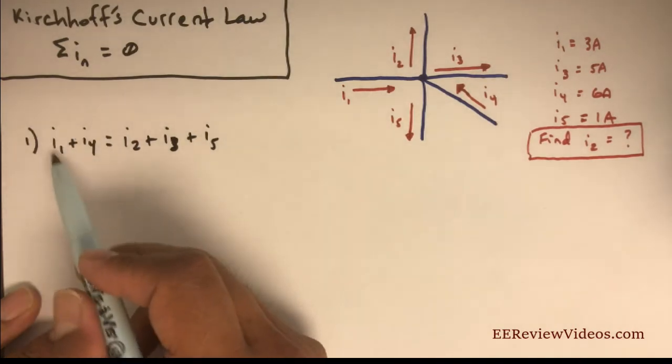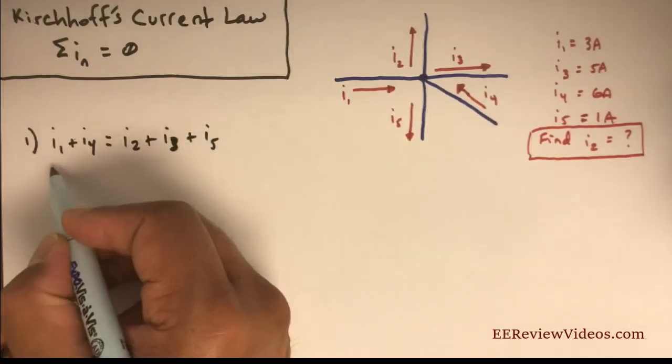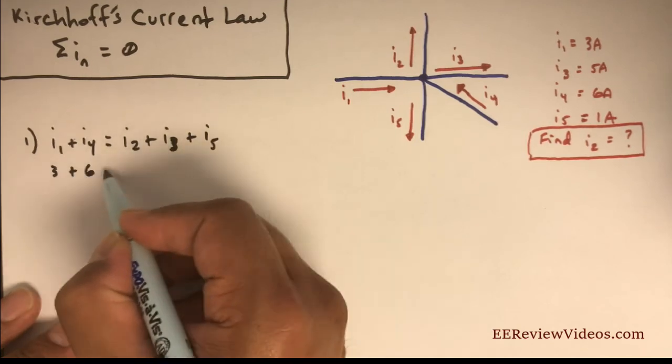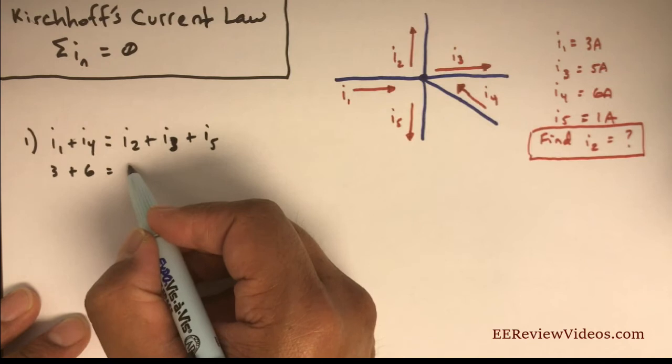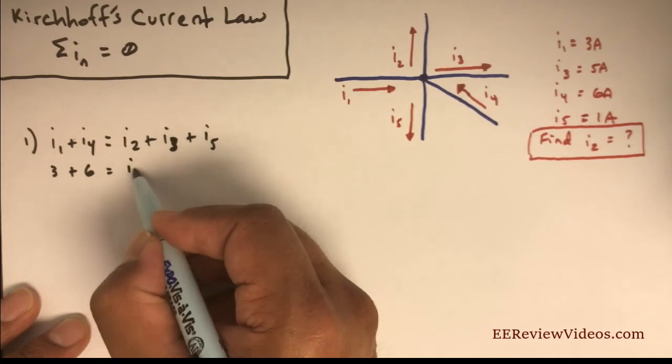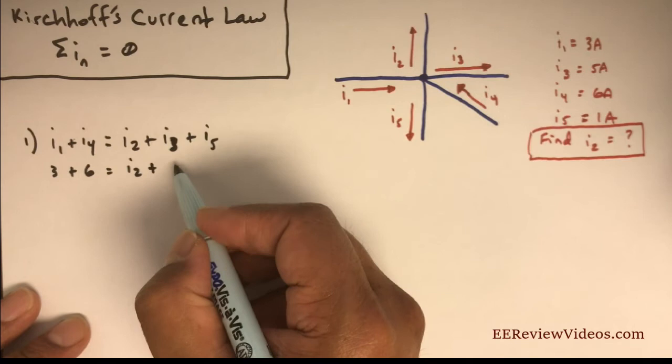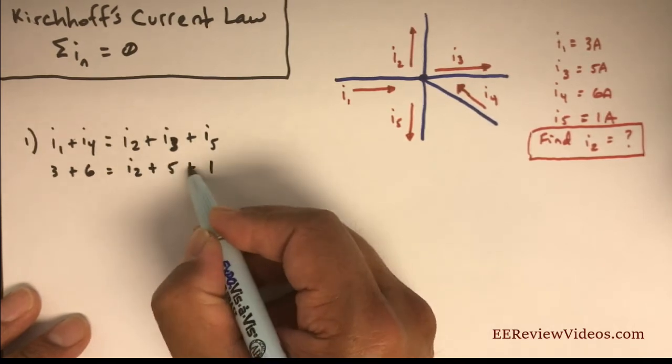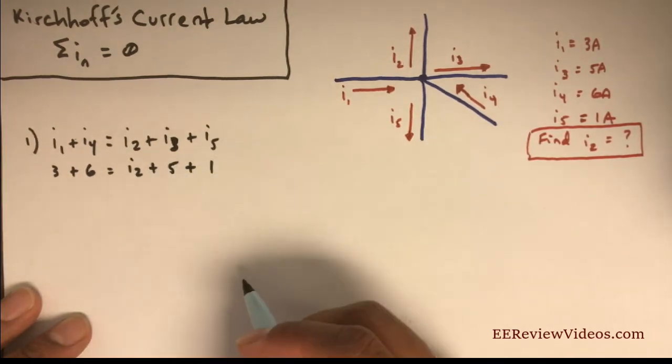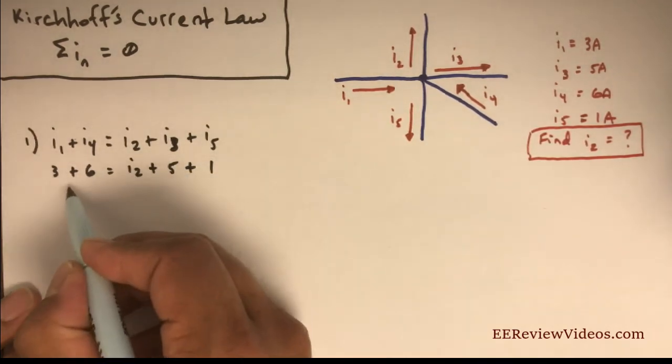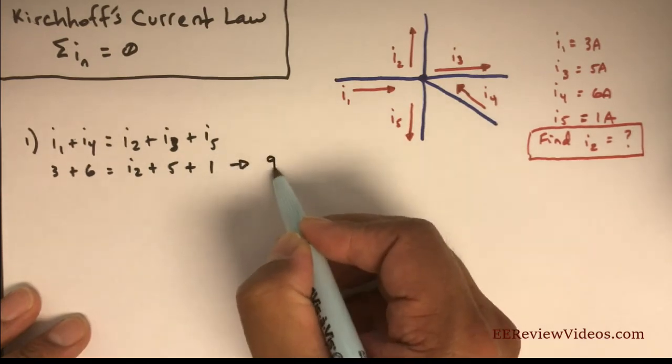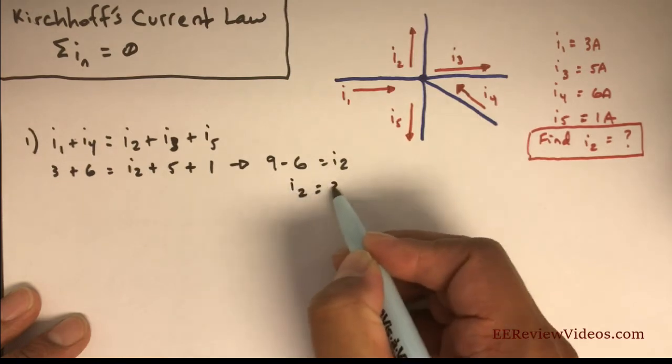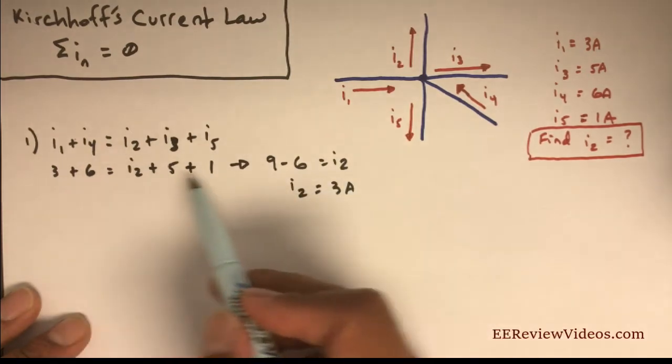The sum of the currents entering should equal the sum of the currents leaving. Current 1 is 3 amps plus current 4 is 6, equals current 2, which is our variable, plus current 3, which is 5 amps, plus current 5, which is 1 amp. Hopefully you can see how the math works here. To quickly finish it, we have 9 minus 6 equals I2, so I2 equals 3 amps.